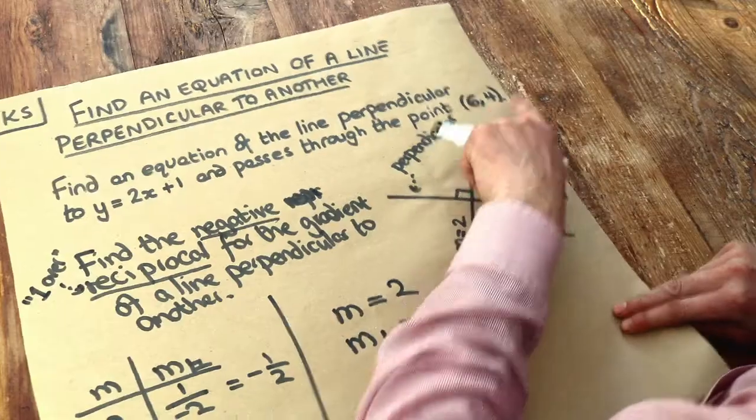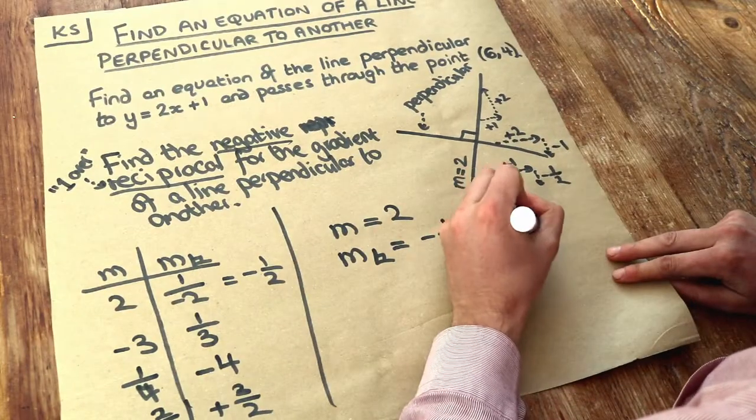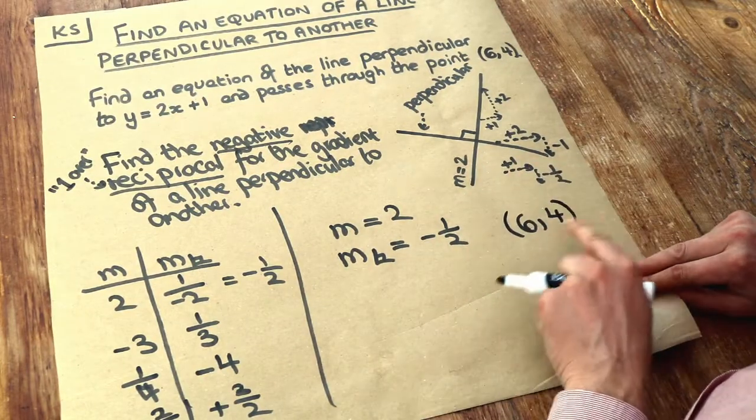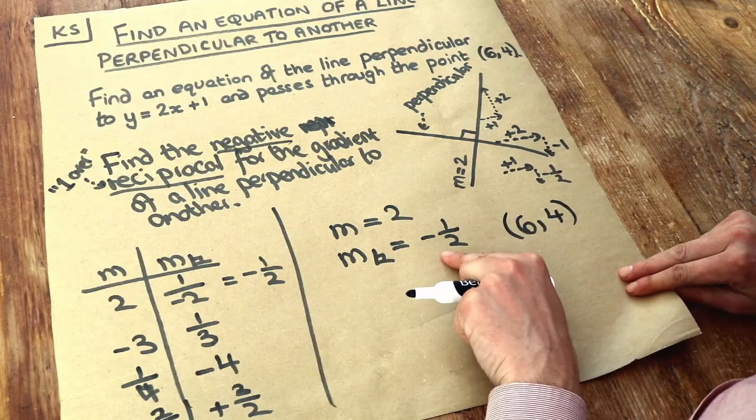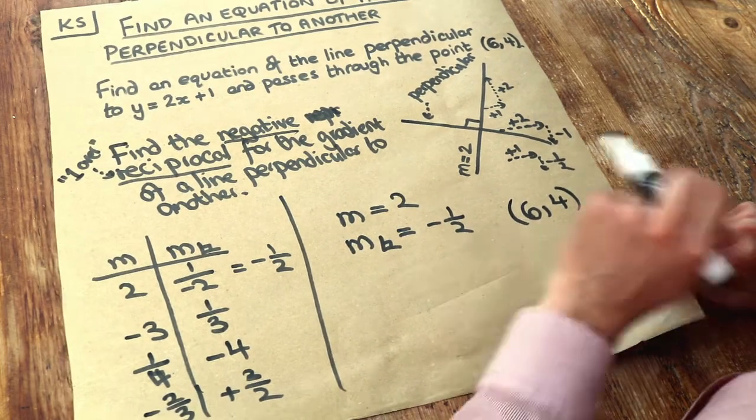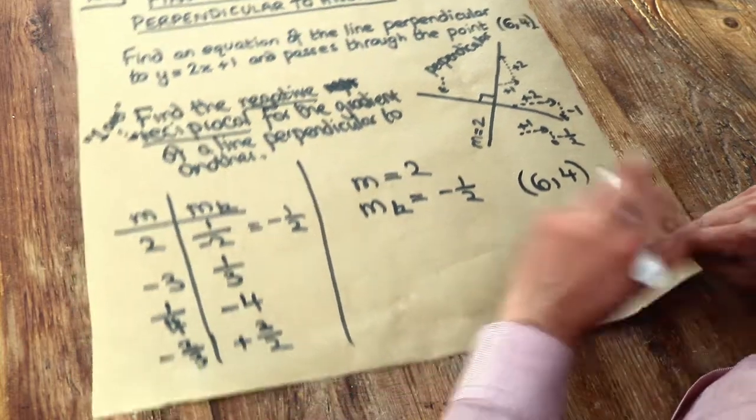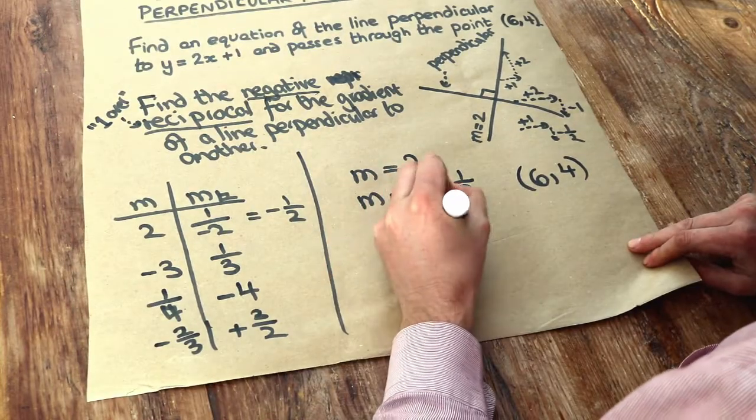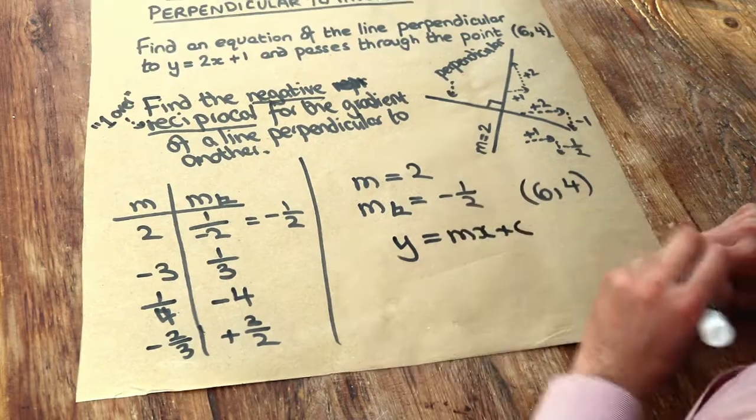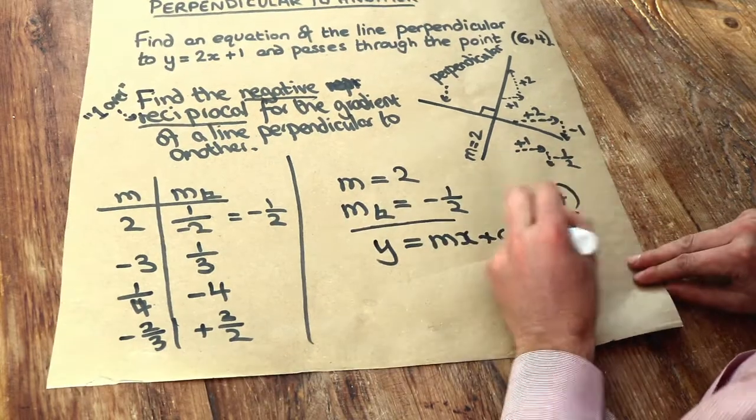And now we also know that it goes through the point (6,4). So we want an equation of a line which goes through (6,4) and has gradient minus half. Now in a previous video we saw how to solve a problem like this.